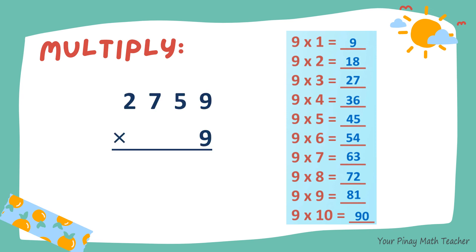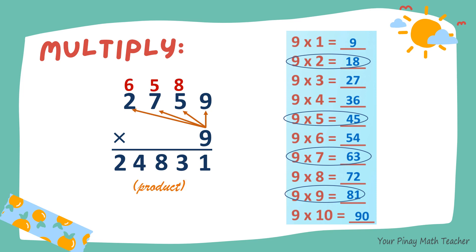The last, 2,759 times 9. 9 times 9 is 81. 9 times 5, 45. Plus 8, 53. 9 times 7, 63. Plus 8, 68. 9 times 2 is 18. Plus 6, 24. So the product is 24,831.